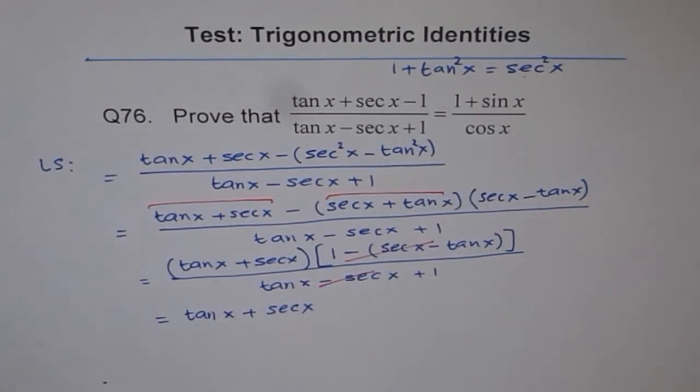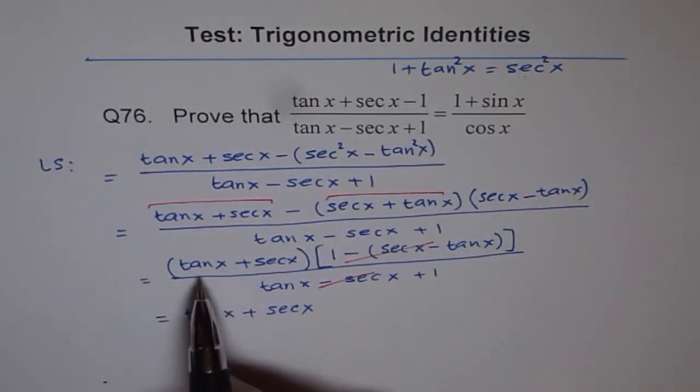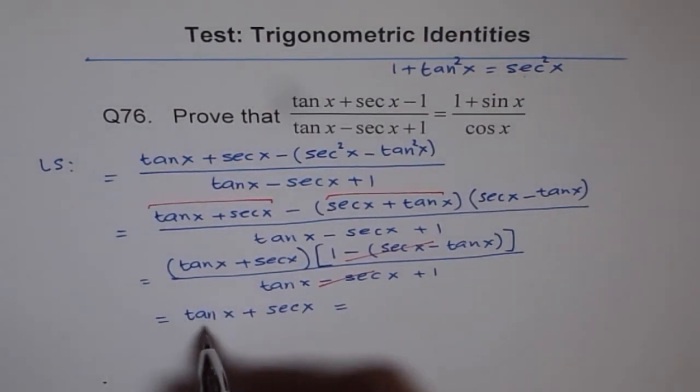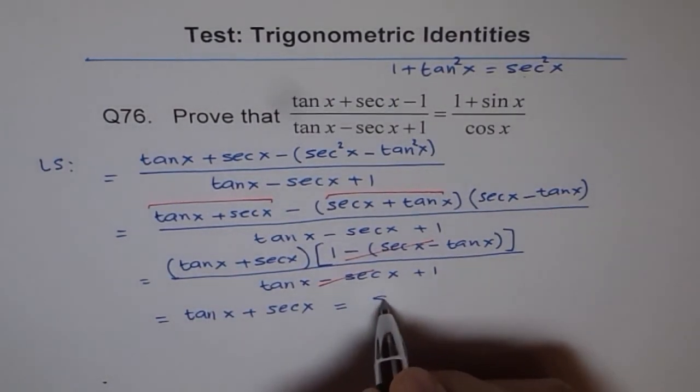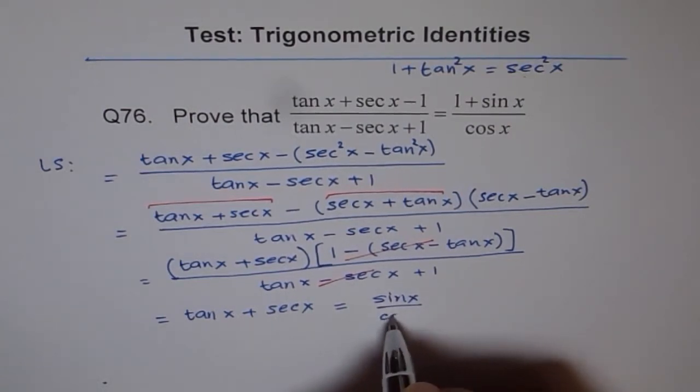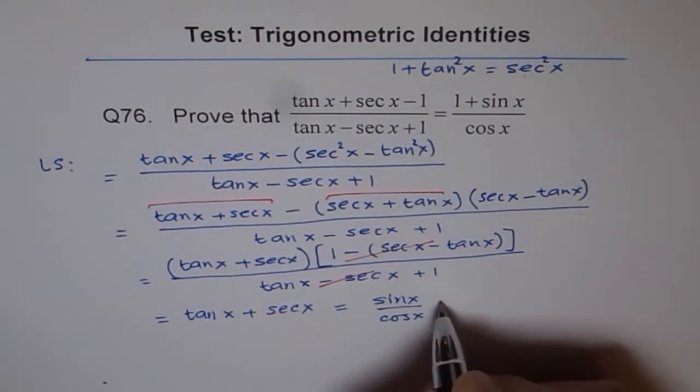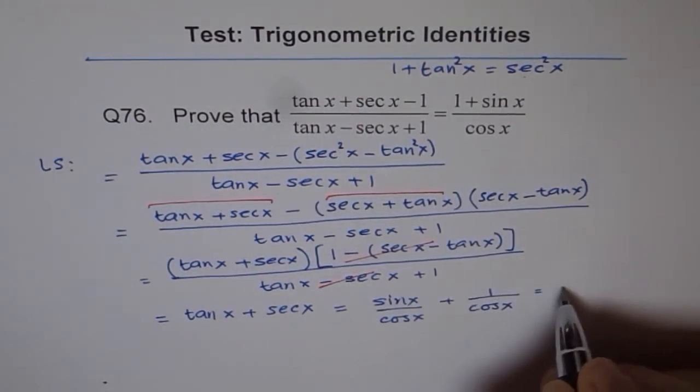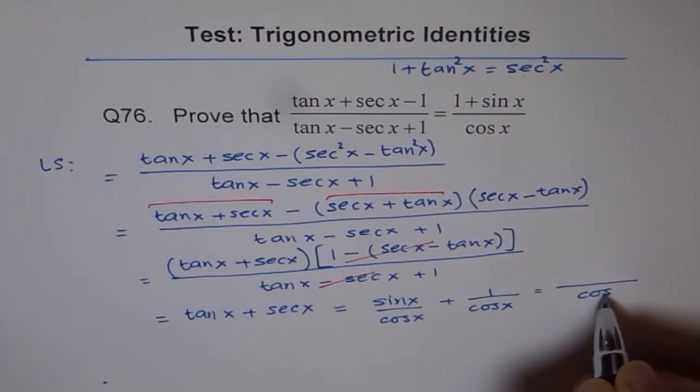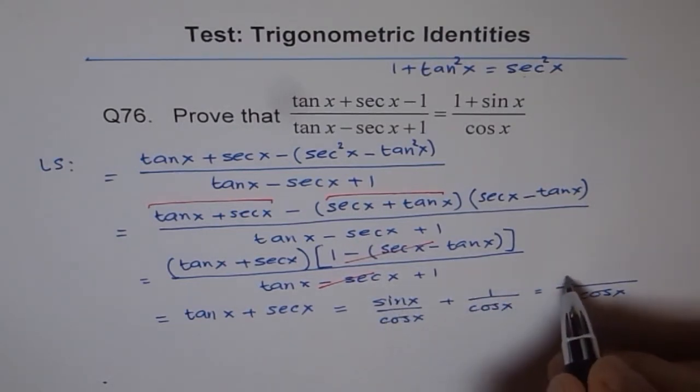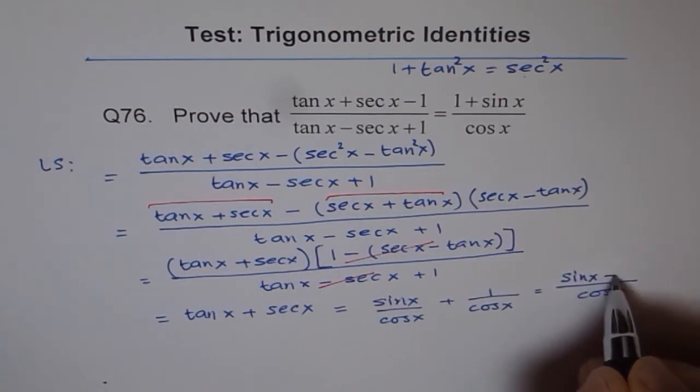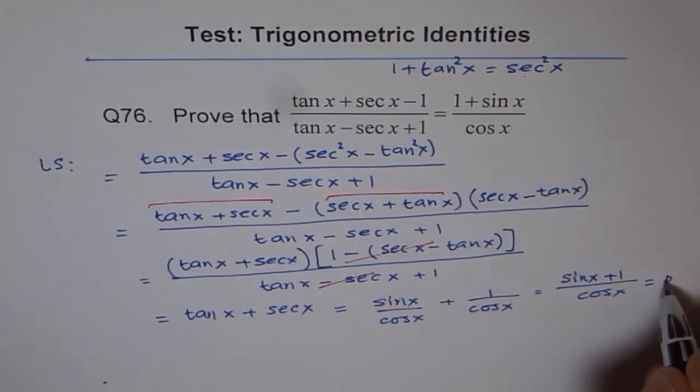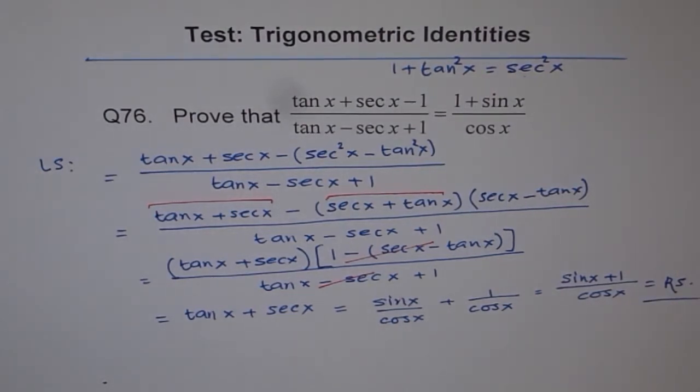Now tan x can be written as sin x / cos x, and sec x can be written as 1 / cos x. Cos x is the common denominator, so we get (sin x + 1) / cos x, which is the same as the right side. Hence the identity has been proven: (1 + sin x) / cos x.